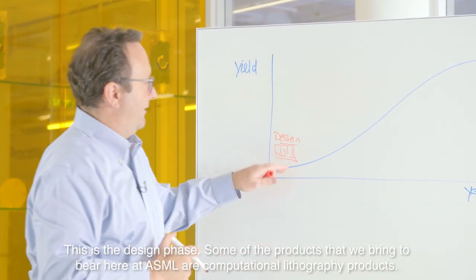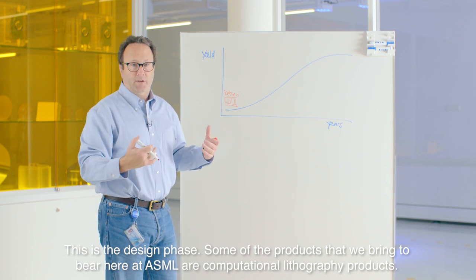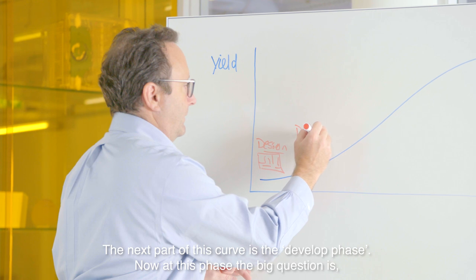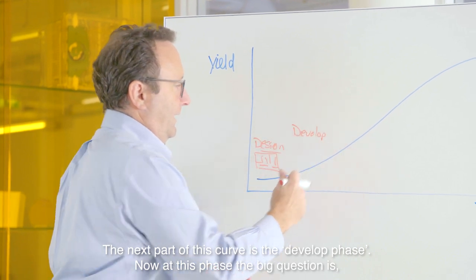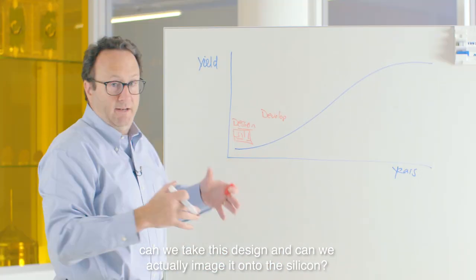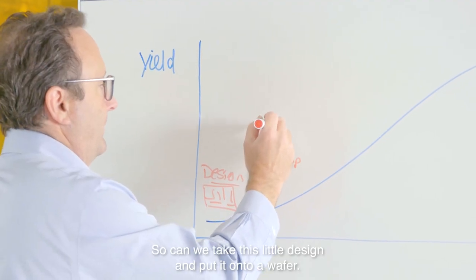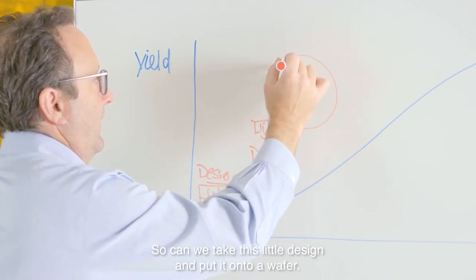Some of the products that we bring to bear here at ASML are our computational lithography products. The next part of this curve is the develop phase. At this phase, the big question is: can we take this design and can we actually image it onto the silicon? Can we take this little design and put it onto a wafer?